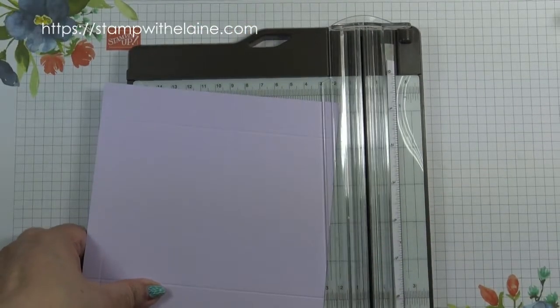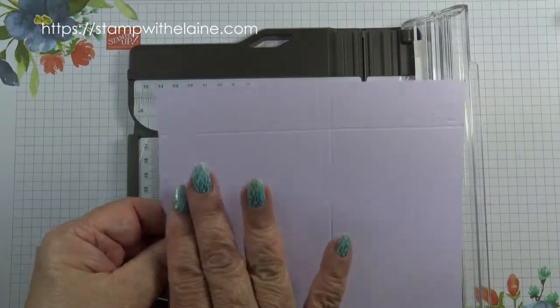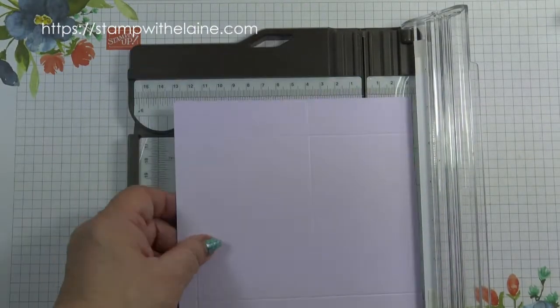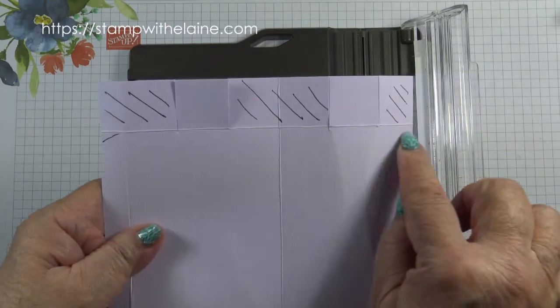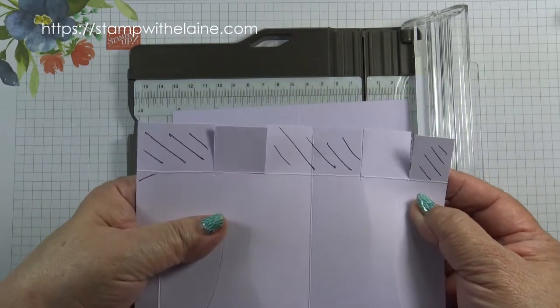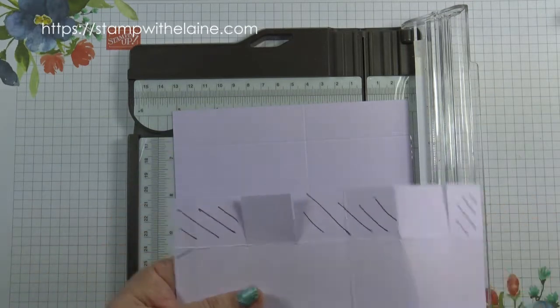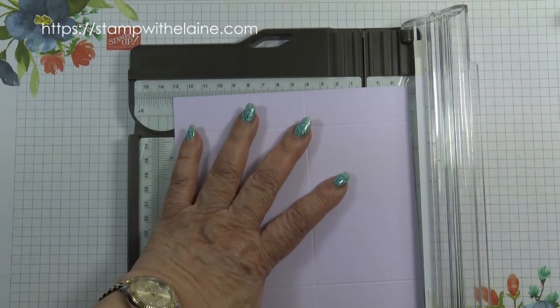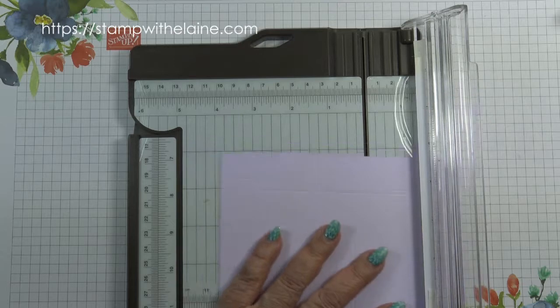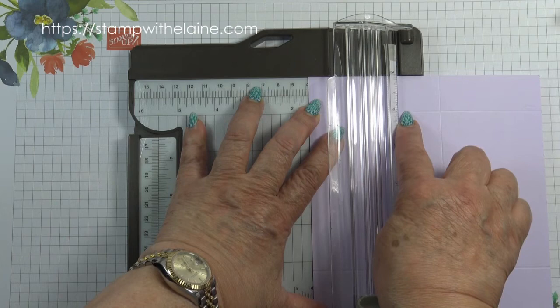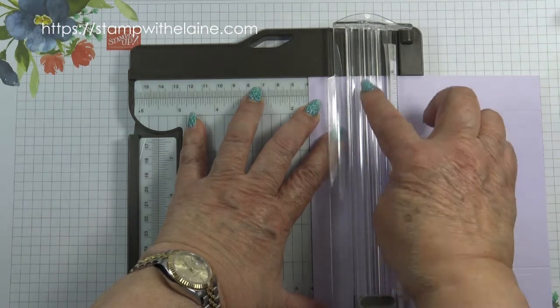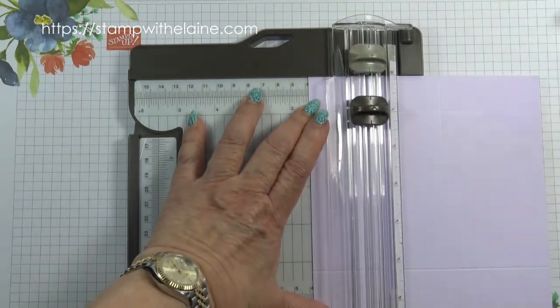Switch to your trimmer, and with the 1/2 inch score line on the left, you want to cut from the 1 inch horizontal line at 1 1/2 inches. So you align the left edge at 1 1/2 inches and cut from the 1 inch score line up to the top.